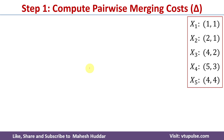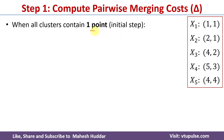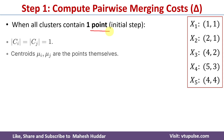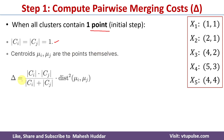In the first step we consider all data points as clusters, and all clusters contain one point, so cardinality of Ci and cardinality of Cj are both equal to 1. The centroids mui and muj are the points themselves, so delta equals 1 times 1 divided by 1 plus 1, which equals 0.5 times the squared distance between Pi and Pj.